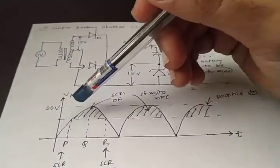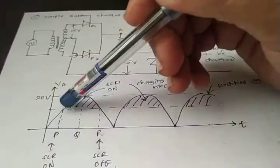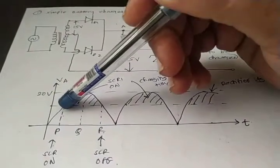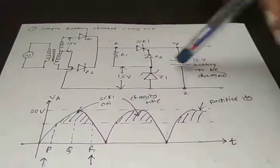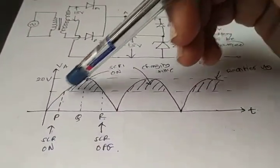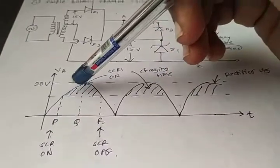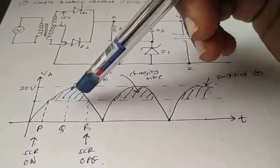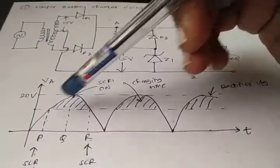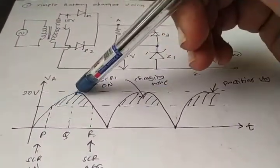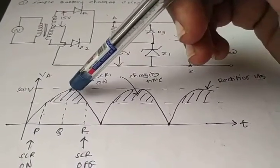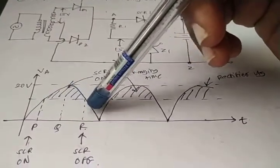At point P, when the voltage at point A becomes greater than the battery voltage, the SCR turns on and the battery starts charging. The dotted line in the waveform shows the charging period of the battery. The battery continuously charges up to a maximum of around 20 volts.